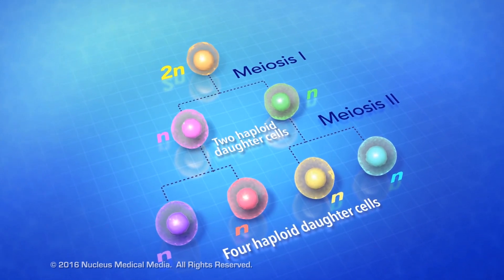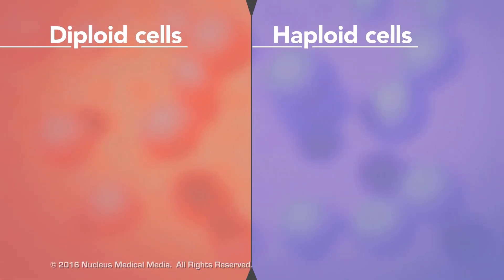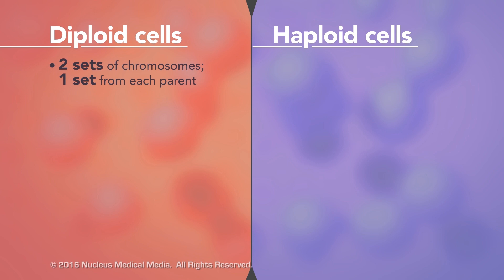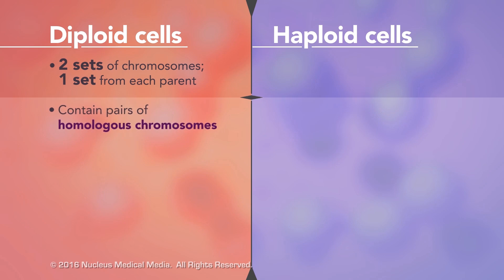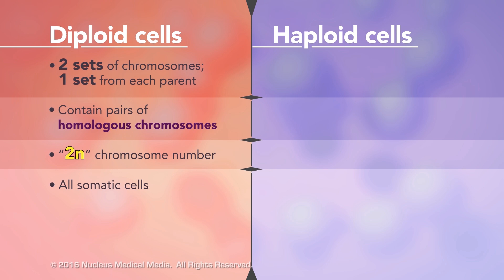We'll cover the details of meiosis in another video. In summary, diploid cells have two complete sets of chromosomes, one set from each parent. Diploid cells have twice the number of chromosomes as haploid cells. The two sets consist of pairs of homologous chromosomes. The diploid chromosome number is written as 2N. All somatic cells, whether they're skin cells, muscle cells, or leaf cells in a plant, are diploid. Diploid cells reproduce only by mitosis.